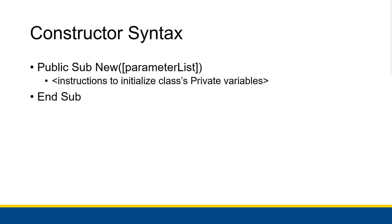The syntax for the constructor is pretty simple. You write 'public sub new', and then you put parentheses because it is a sub-procedure. Sometimes you put parameters in, sometimes you don't. Inside the sub-procedure, you put instructions to initialize the class's private variables, and then you end the sub. The constructor must be public because other objects — such as a button click event procedure in your main form — need to be able to access it.